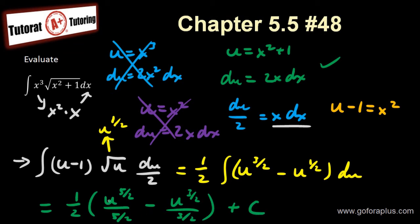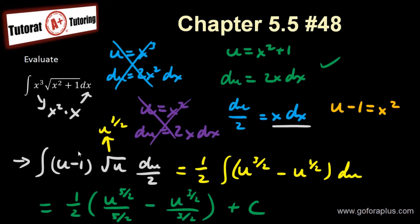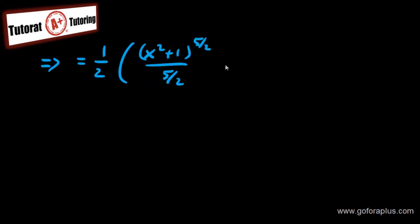Now I want to replace back the u to be x squared plus 1. Okay, so let me do that. So this is going back to replacement, which is 1 half x squared plus 1 here to the power of 5 half over 5 half. And then I have, the next term would be a minus, so minus x squared plus 1 to the 3 half over 3 half, then plus c here.